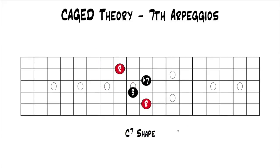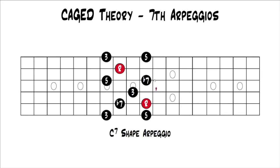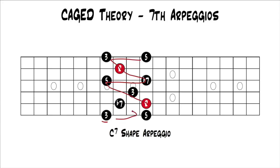The next one is a C dominant seven shape. This one doesn't really have an arpeggio in it because you don't even have a fifth in there. If we add in the extra notes around it, you can see the C seven shape is right there, but we've added in the extra threes, fives, and flat sevens which make up a dominant seventh arpeggio. Then we can just play it in order: root, three, five, flat seven, root, three, five, and back down to the lowest note and then back up to the root. You'd have a nice C seven shape arpeggio that spans all the strings — a really full arpeggio.